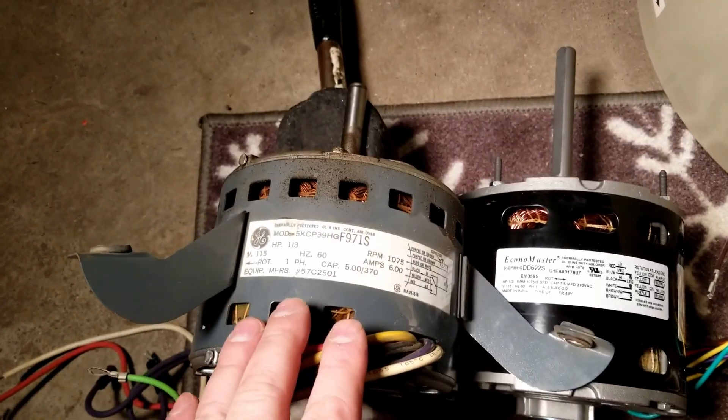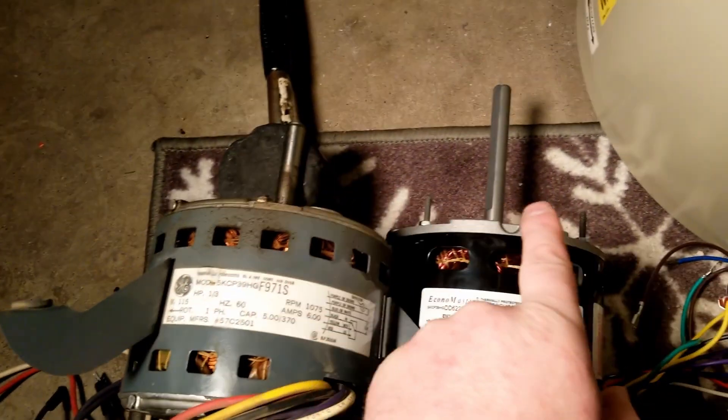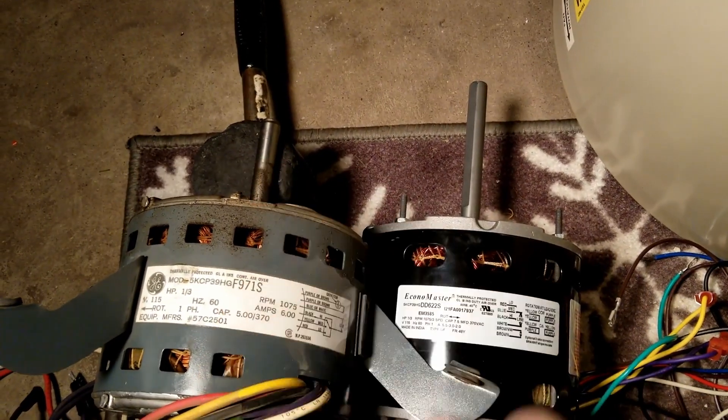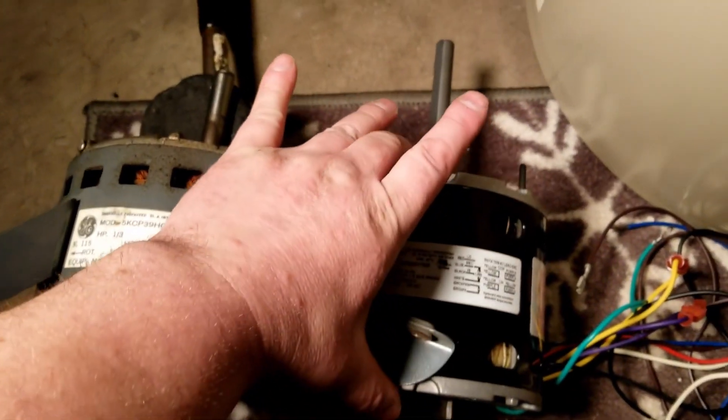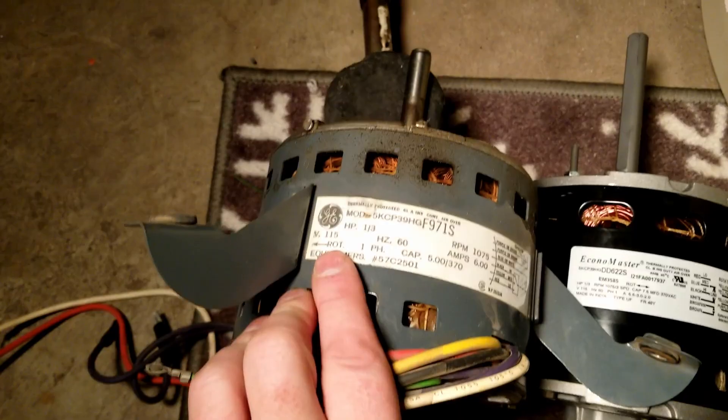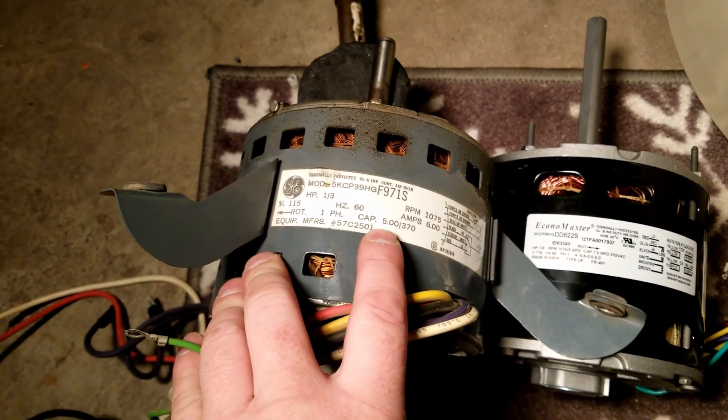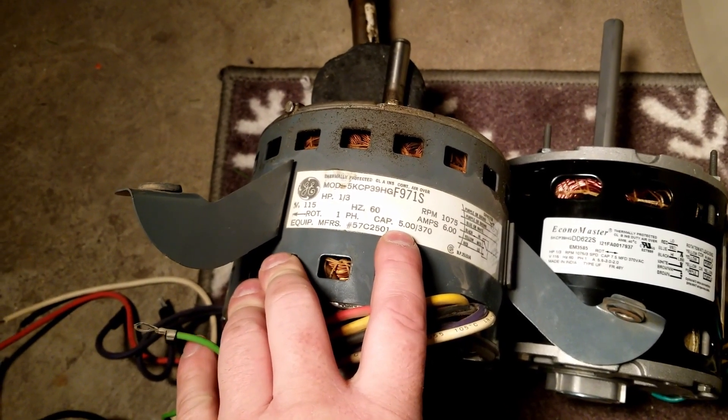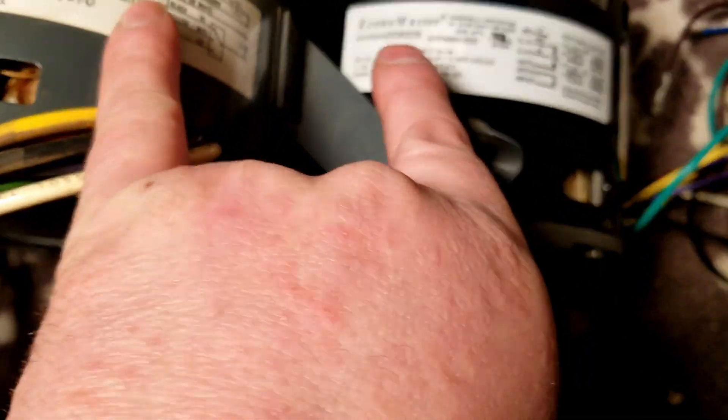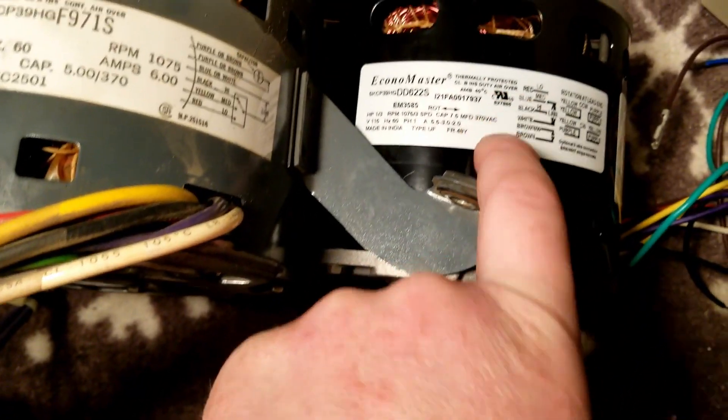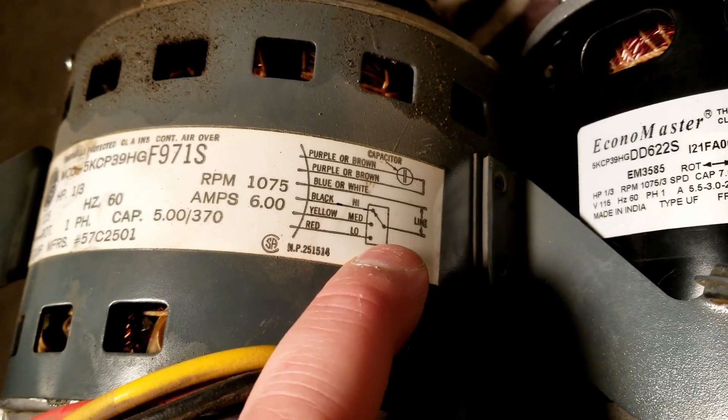Now we get our motors right next to each other. Couple differences right off the bat: the shaft on the new one is a lot longer than the old one. It's okay, we're just noting differences. This motor body's a little bit thicker than this one. Both of them one-third horse, 110 volt, 60 hertz. They always tell you what size capacitor to use: this one 5, this one 7.5. One-third horse, they're both the same RPM. This one's 0.5 amps less than this one.